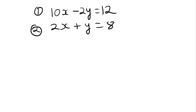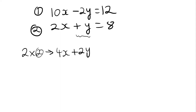I'm going to make the coefficients in front of the y's the same, except for the signs. So I'm going to multiply equation 2 by 2, so that instead of plus y, I have plus 2y. 2 times equation 2 gives me 4x plus 2y equals 16. I'm going to label this equation 3.